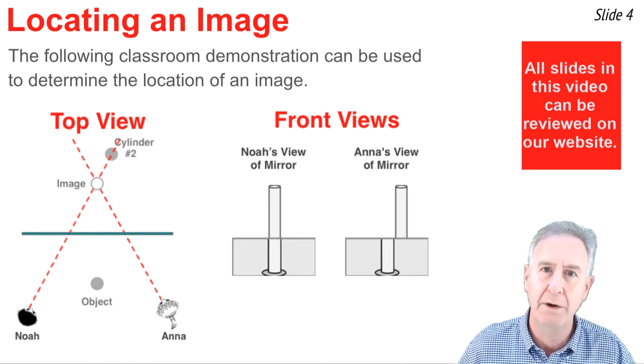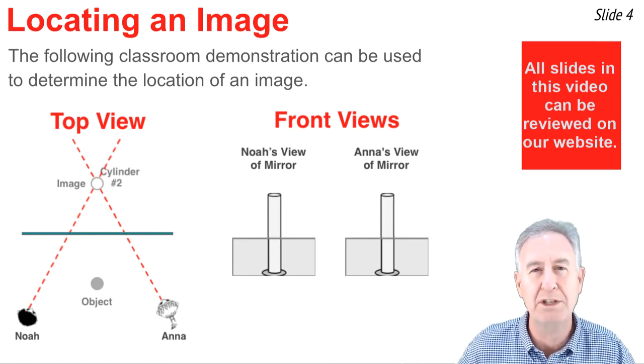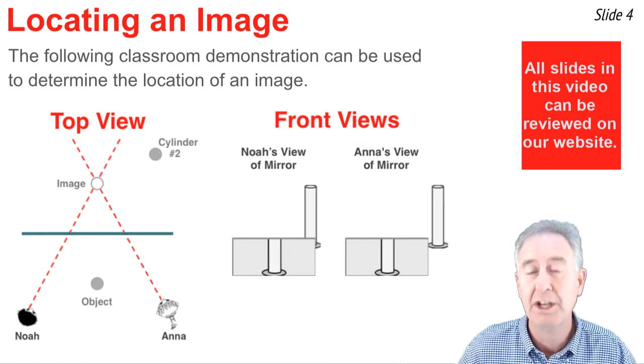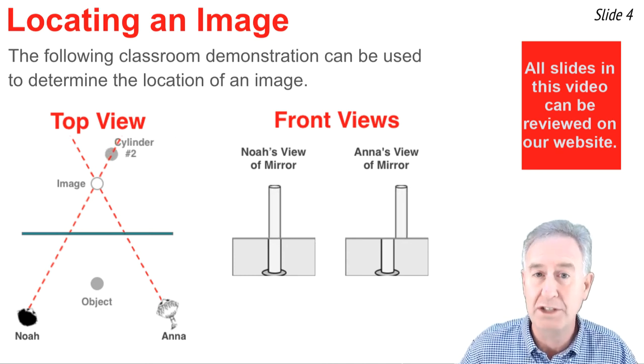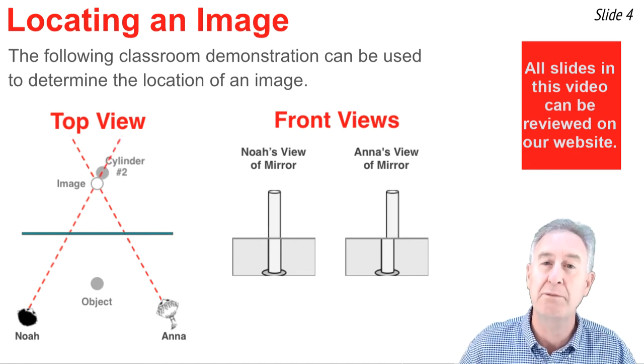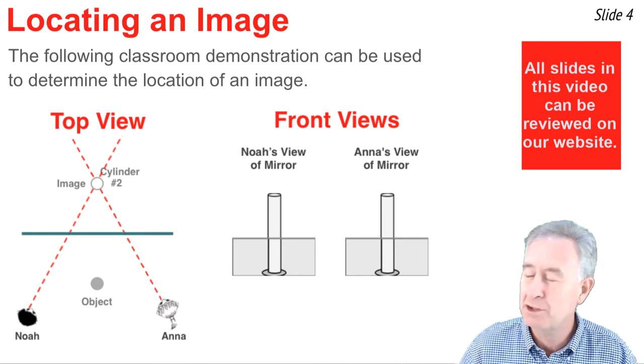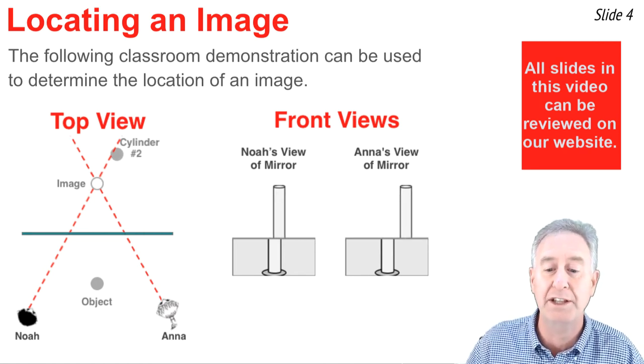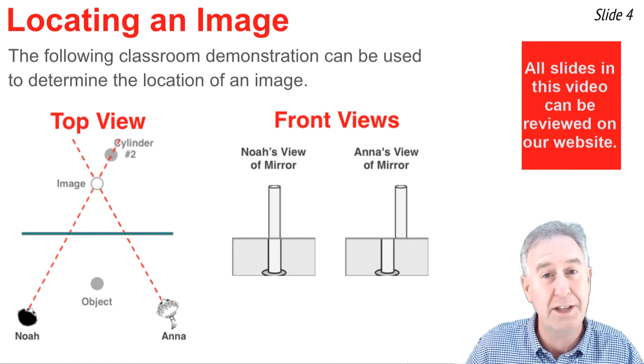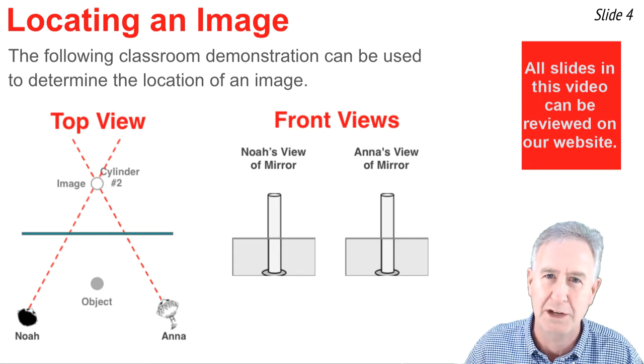Then I ask Noah, hey Noah, I'm going to move this cylinder until it's in line with the image of the cylinder that you see in the mirror. So focus on the image of that cylinder in the mirror, and when I move the second cylinder such that it extends above the mirror and in line with the image, you tell me to stop. And so I begin to move the cylinder closer and closer until Noah finally says, stop. And it's at that point that I found the line of sight for Noah at the image location.